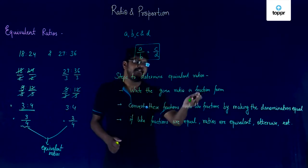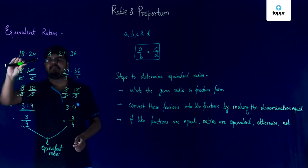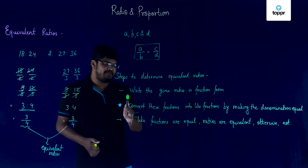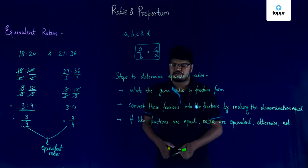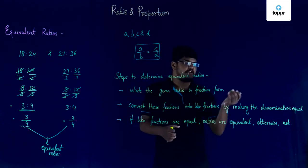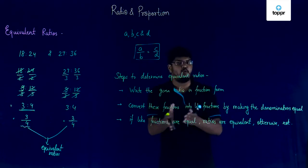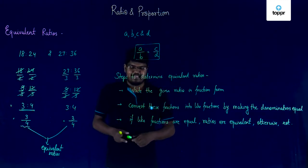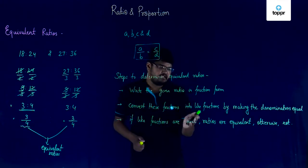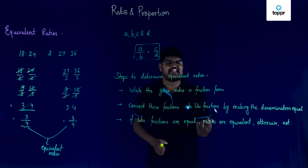The first step is to write the given ratio in fraction form. For the next step, we have to convert the fractions into like fractions by making the denominators equal. In this particular step, we are going to use the LCM method. We are going to find the LCM of both the denominators and then convert the already existing denominators into that LCM value. If the like fractions are equal, then this will imply that the ratios are equivalent, but if the like fractions are not equal, they'll not be equivalent ratios.